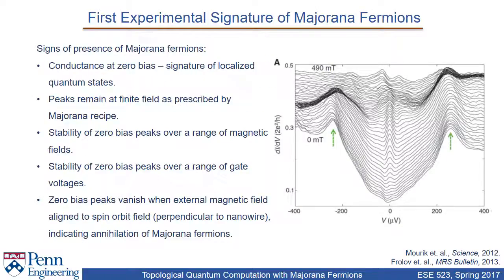So how do we know Majorana fermions have formed? There are signatures which indicate their formation. Majorana fermions are localized quantum states, and thus a conductance peak at zero bias implies Majorana fermions may have formed. These zero-bias peaks remain at finite field as prescribed by Majorana theory, and are stable over a range of magnetic fields as well as gate voltages. The conductance versus voltage plot on the right proves these requirements. Zero-bias peaks vanish when the external magnetic field is aligned to the spin-orbit field of the nanowire.